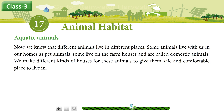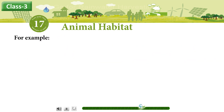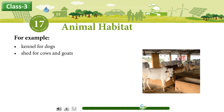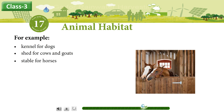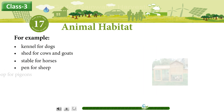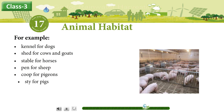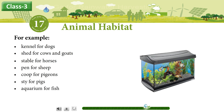Now, we know that different animals live in different places. Some animals live with us in our homes as pet animals. Some live on the farm houses and are called domestic animals. We make different kinds of houses for these animals to give them a safe and comfortable place to live in — for example, kennel for dogs, shed for cows and goats, stable for horses, pen for sheep, coop for pigeons, stye for pigs, and aquarium for fish.